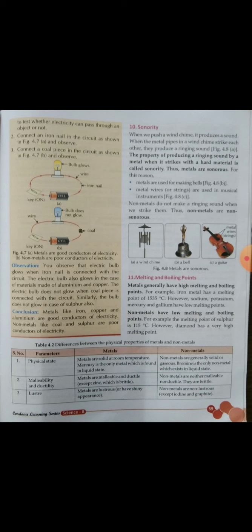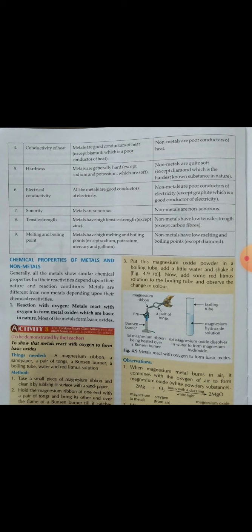In this chapter, you have seen the differences between physical properties of metals and non-metals. The physical properties discussed are: physical state, malleability, luster, conductivity of heat, hardness, electrical conductivity, sonority, tensile strength, and melting and boiling points. All of these have been explained in today's class.